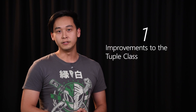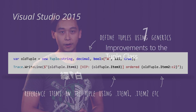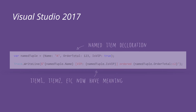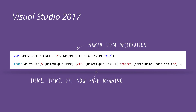My top feature is the improvements to tuples. When you worked with tuples before, you had to reference all the items by item 1, item 2, item 3, and once you're out of that function it wasn't very meaningful. With C# 7 they've done an awesome job in making your code really readable by letting you name those items. So you can say item 1 is the customer name, item 2 is the order total, and item 3 is whether it's a VIP customer — it's really clear what each of those items are.